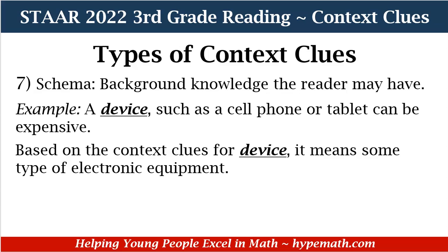The next context clue is schema — background knowledge the reader may have. In our sample sentence: 'A device such as a cell phone or tablet can be expensive.' If we did not know what device meant, our context clues help us know it means some type of electronic equipment. The phrase 'such as a cell phone or tablet' tells us — because we know a tablet and a cell phone are electronics.